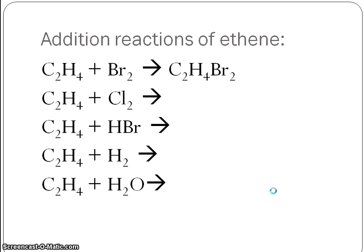A very straightforward reaction type — two molecules forming just a single larger product. So there's the bromination of ethene. Have a go at working out the addition products for these other reactions.